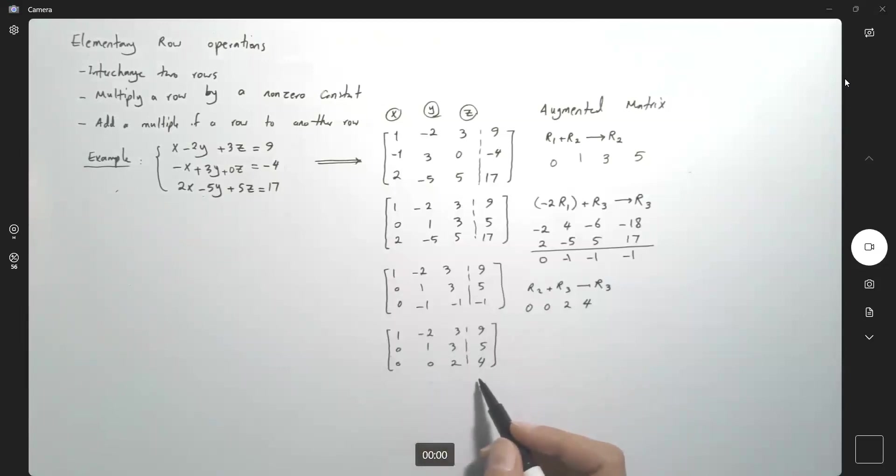You can rewrite this matrix into system of linear equations and easily solve your system. You can also go further. Perform multiplication for the last row. You can create one here. It makes it easier. So let us multiply R3 by a half and replace R3.